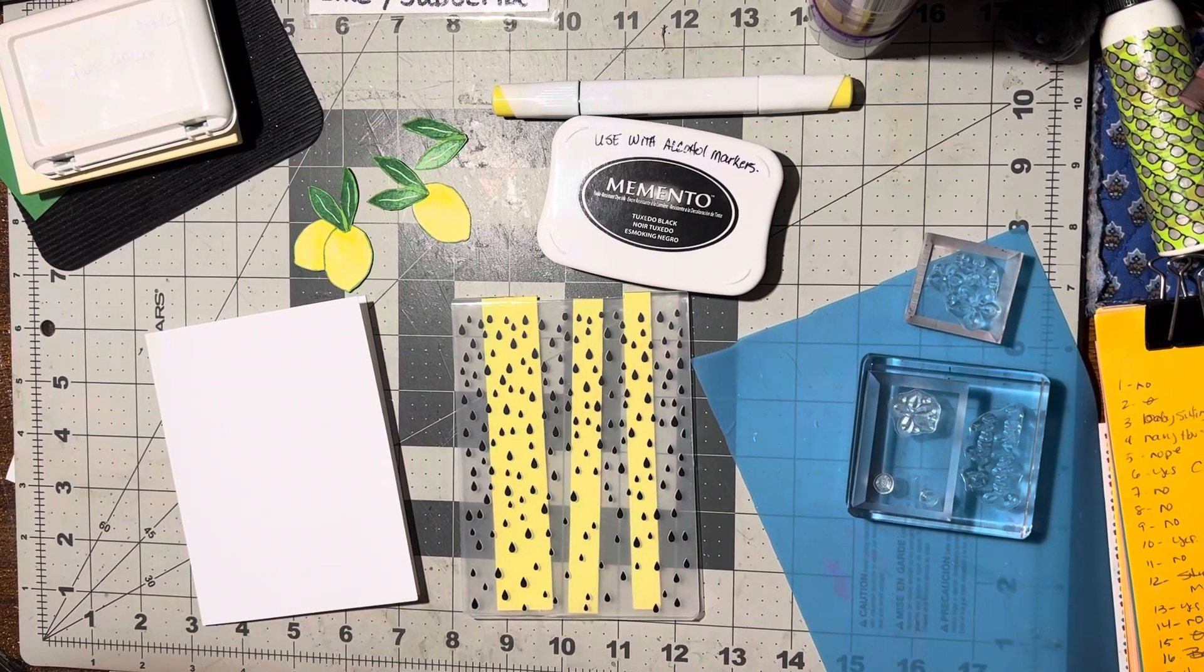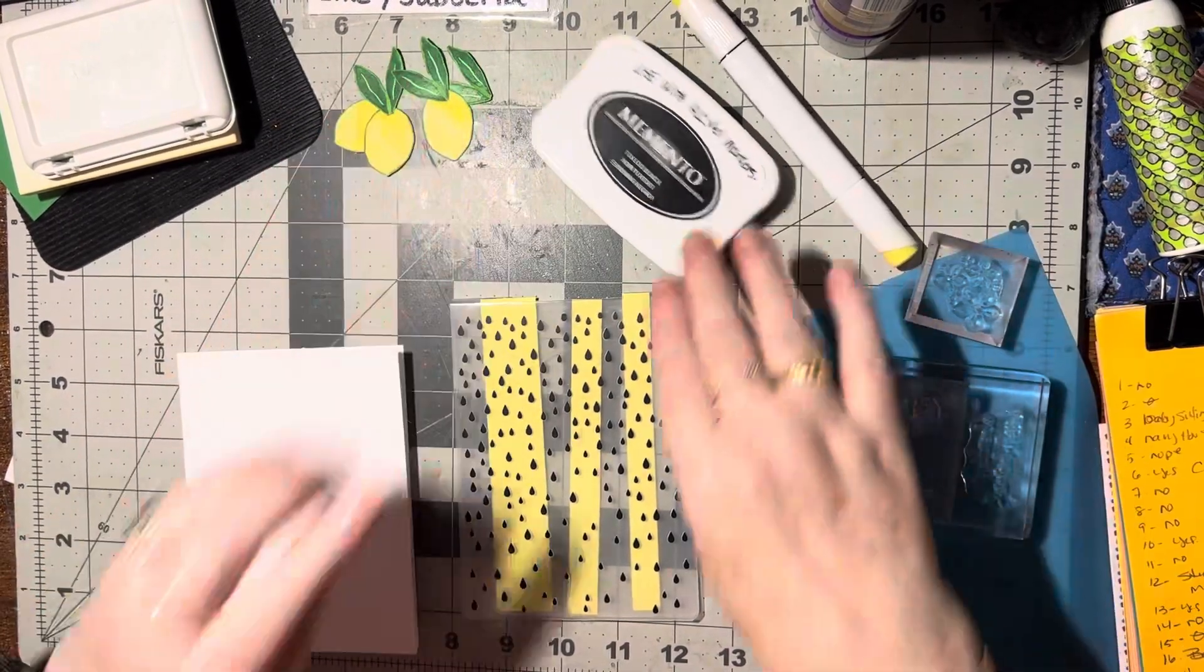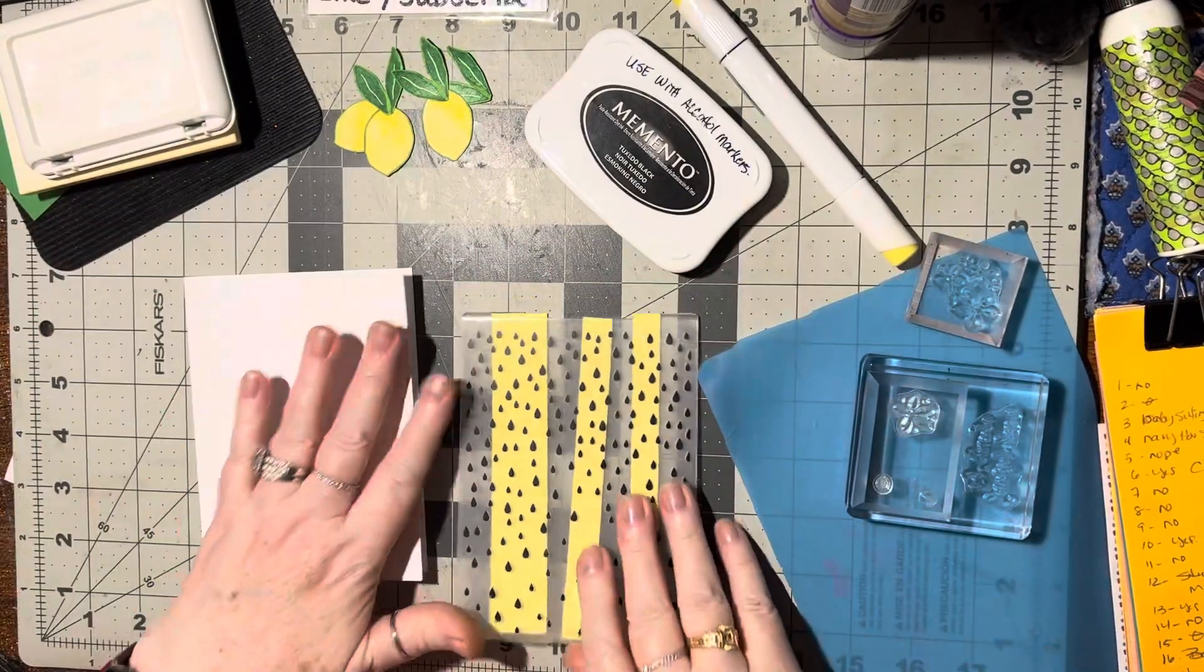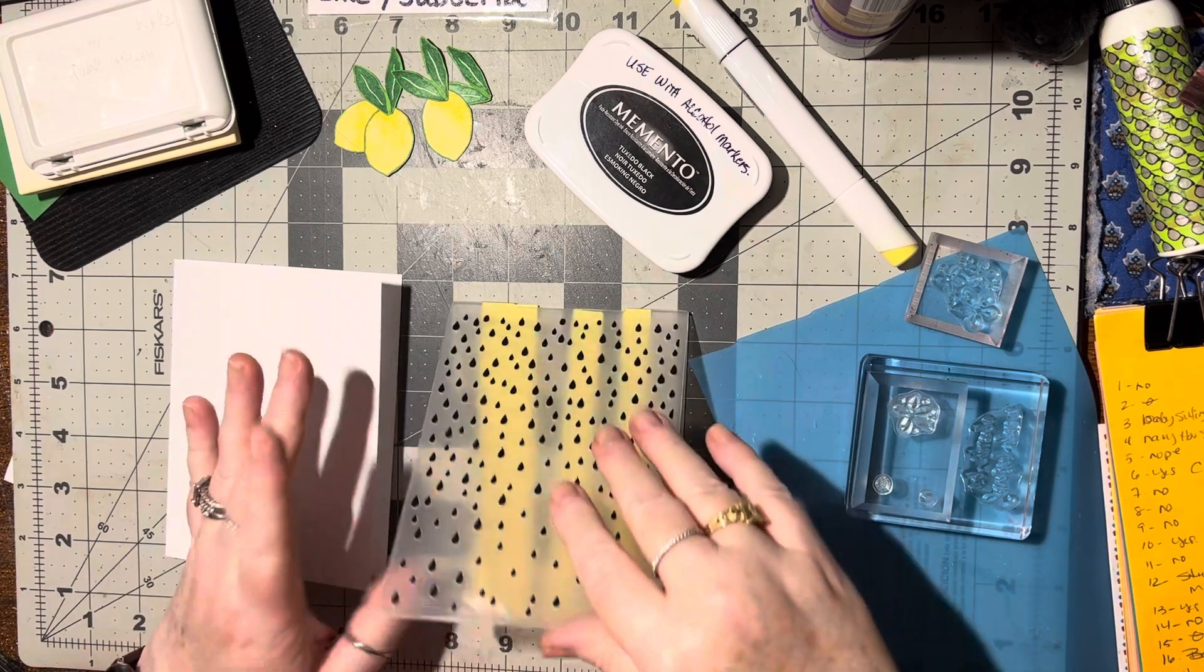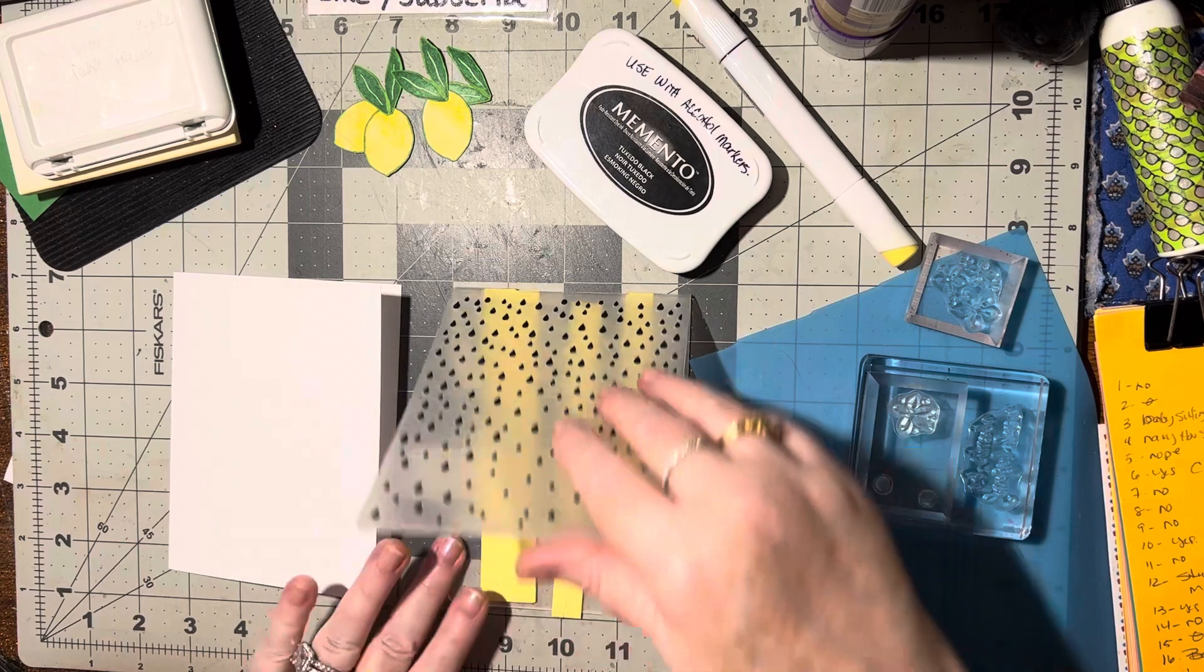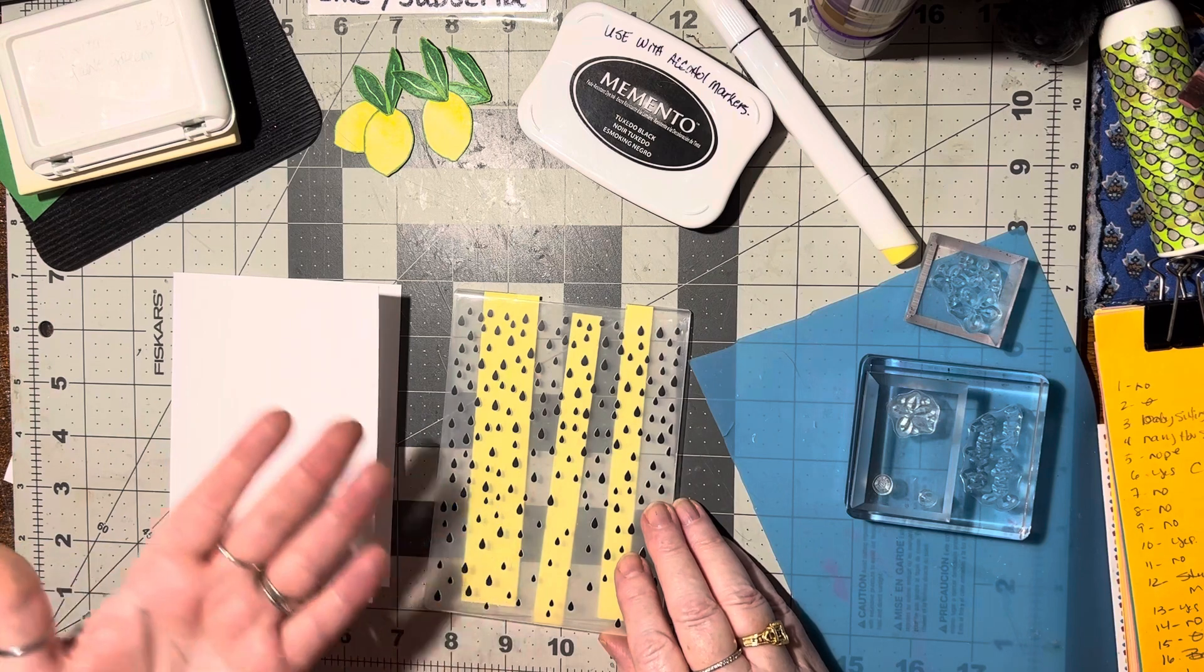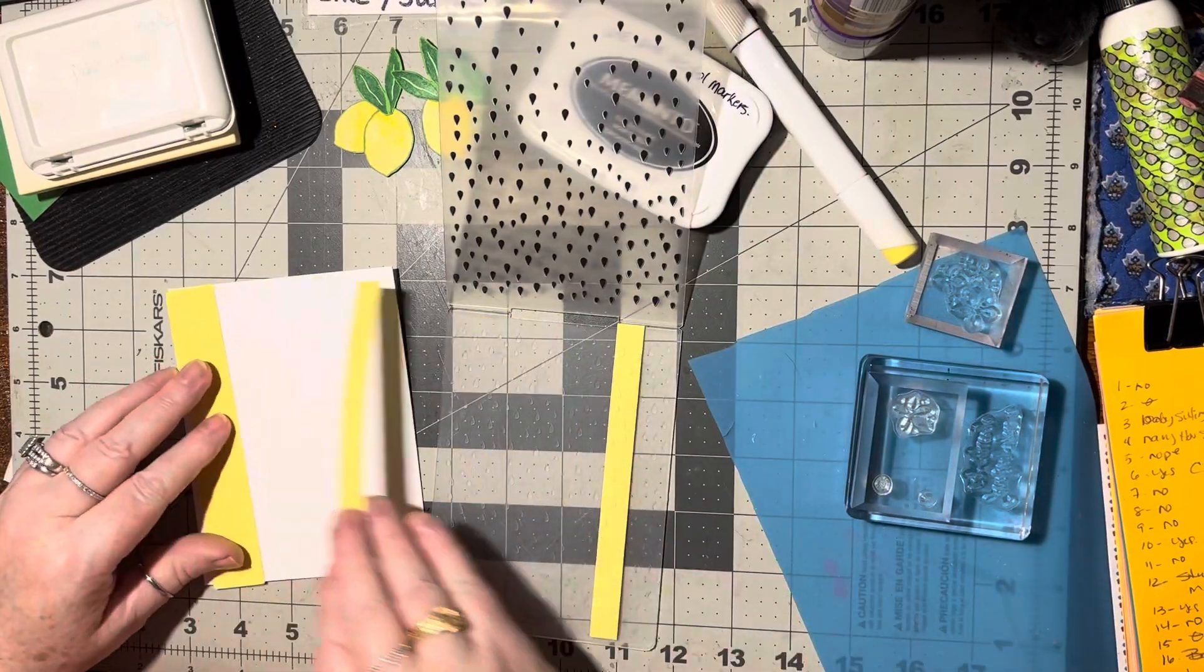Hello, today we're going to make a lemon card. All you need is an A2 card, two pieces of yellow paper, and I've used this raindrops pattern but it reminded me of pulp, like orange and lemon pulp, so I thought I'm going to use that.